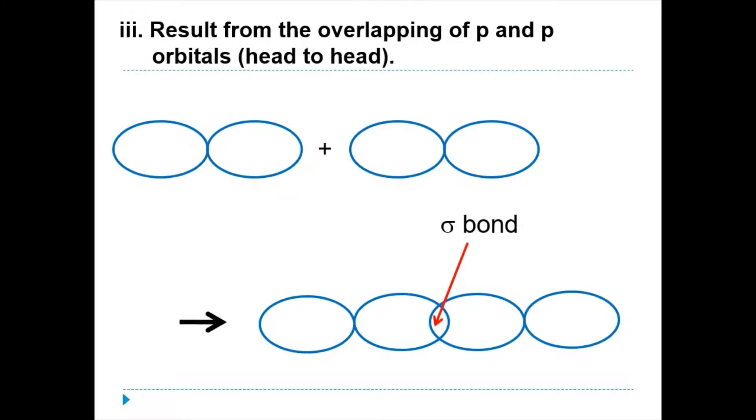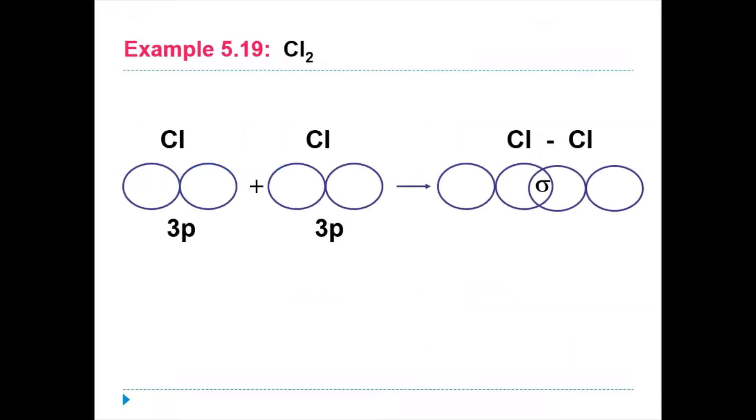Sigma bond can also be formed from the overlapping of P and P orbitals overlapped at head-to-head basis. Let's draw the orbital overlapping in the chlorine gas molecule. We draw one P orbital that belongs to a chlorine atom and there would be another P orbital for the other chlorine atom. The space where the orbital overlaps head-to-head here is labeled as sigma bond.